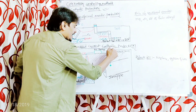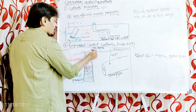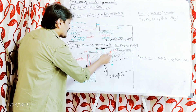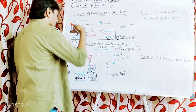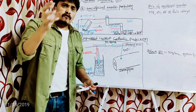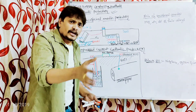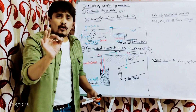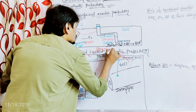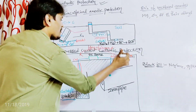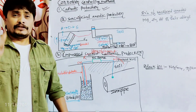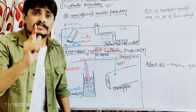The negative terminal of the battery is connected to the base metal and the positive terminal is connected to the inert electrode. The flow of current takes place from the negative terminal of the battery to the positive terminal of the battery. Always remember that the flow of electrons is always in the opposite direction to the flow of current.